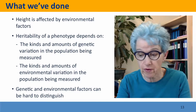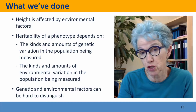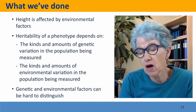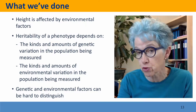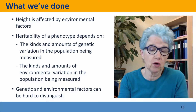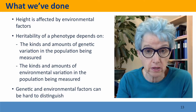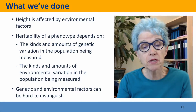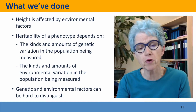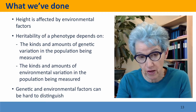We've considered how height is affected by environmental factors, and then we backed up to think about heritability in general — how heritability is something that we measure. It's not a defined property of a set of genes and phenotype. Rather, heritability depends on the kinds of genetic variation present in the population we're measuring, so we might measure different heritabilities for the same phenotype in different populations. It also depends on the amount of environmental variation, so we would measure a higher heritability in an environment with very little environmental effect on the phenotype. We also talked about how genetic and environmental factors can be hard to distinguish, with the example of tulip viruses and Parkinson's disease, where the interaction between genetic and environmental factors was a tool that let us find genetic factors we otherwise couldn't see.